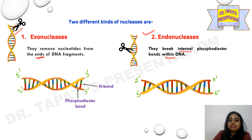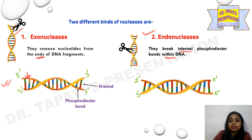If you see this figure, this is one DNA molecule. The 5' to 3' exonuclease removes nucleotides from the 5' end — so this enzyme acts at that terminal position. This is the 5' to 3' exonuclease activity.